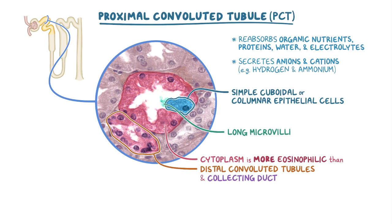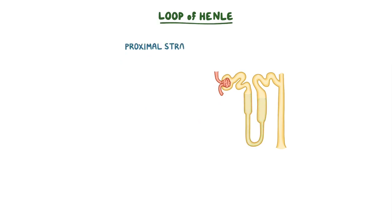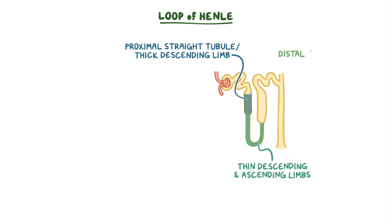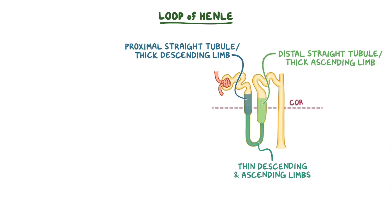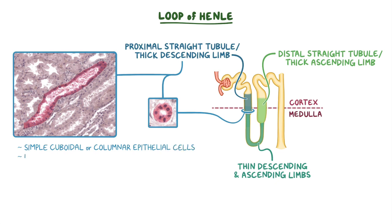Also, their lumen will often form a star-like, or stellate, appearance. Next is the loop of Henle, which can be split into three parts: the proximal straight tubule, or thick descending limb; the thin descending and ascending limbs; and the distal straight tubule, or thick ascending limb. The thick descending limb starts in the renal cortex and moves down into the renal medulla, from where this cross-section and longitudinal section of the tubule were taken. The cells of this portion of the loop of Henle have very similar morphology to the previous section of the nephron, with simple cuboidal or columnar epithelial cells that have long microvilli and a dark pink, or eosinophilic, cytoplasm.